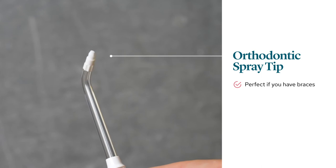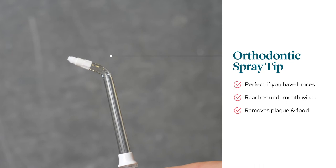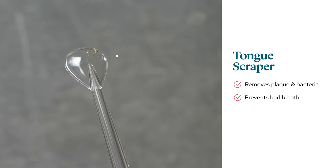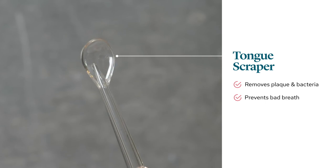The next tip is the orthodontic tip. If you have braces or you're using an orthodontic appliance, you can use this tip to get in around the wires and to remove plaque and food. The last tip is a tongue scraper, amazing for removing plaque and bacteria from your tongue, which is great for freshening breath.